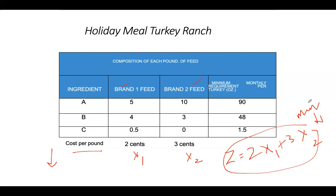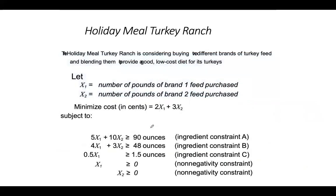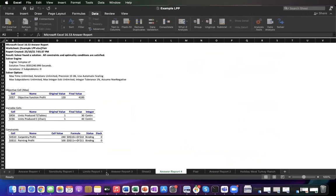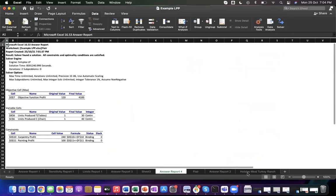For the constraints, each ingredient has a minimum requirement. For ingredient A: 5x1 + 10x2 ≥ 90. Similar constraints apply for ingredients B and C. These are greater-than-or-equal-to constraints because we must meet minimum nutritional requirements in the blend.